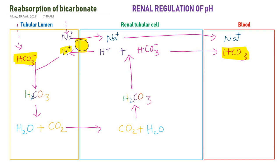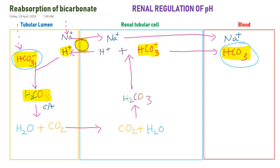The bicarbonate reabsorbed into the blood is effectively the same bicarbonate that was originally filtered into the tubular lumen. It combines with hydrogen ion to form carbonic acid, is converted to CO2 and water via carbonic anhydrase, diffuses into the tubular epithelial cell, and is regenerated as bicarbonate, which is then recovered to the blood. This is called conservation of base — reabsorption or reclamation of bicarbonate — in order to acidify the urine.